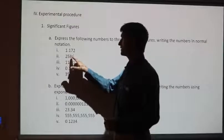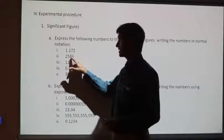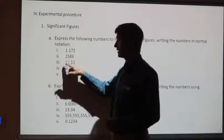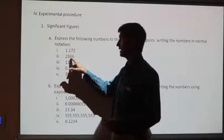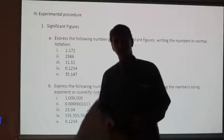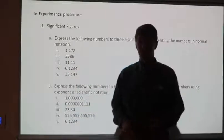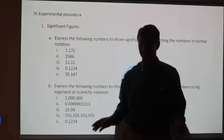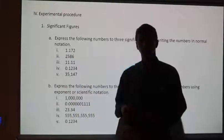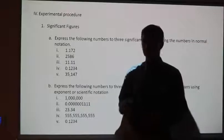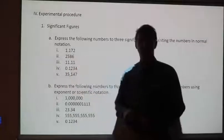For 2586, I keep the first three and use the 6 to round up 8 to 9, so this becomes 2,590. A big mistake that a lot of people make is you just cut off the 6 and change this to 259 — but that's not anywhere near this value. You put a zero there as a placeholder and it becomes 2,590. Do the rest for the next three — three significant figures.